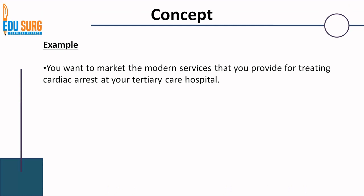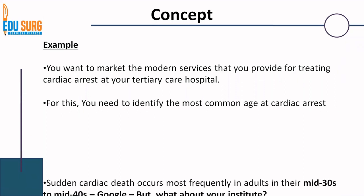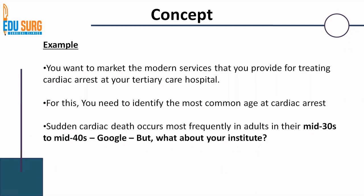To understand the concept, let us take an example. Suppose you want to market the modern services you provide for treating cardiac arrest at your tertiary care hospital. When you want to do marketing, you need to target a specific age and gender. Google shows that mid-30s and mid-40s are very common ages for sudden cardiac death. But what about your institute? You try to find data from your institute to understand the age at which sudden cardiac death is most frequently seen, so you can target your marketing towards that population.